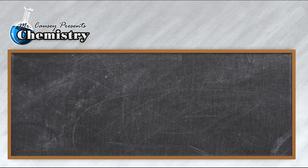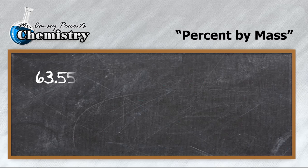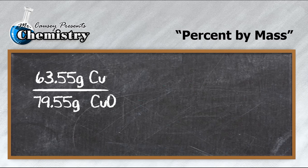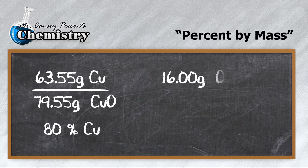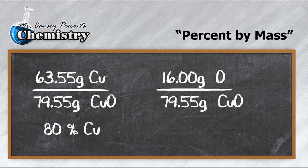Now let's look at the percent by mass. We know that 63.55 grams of copper are in 79.55 grams of copper 2 oxide. Thus, it's 80% copper which means then if we calculate the oxygen it should be 20% and it is.